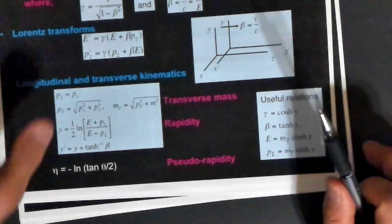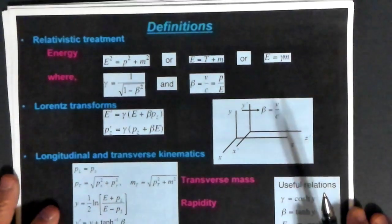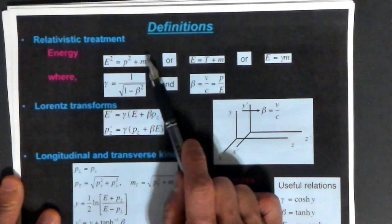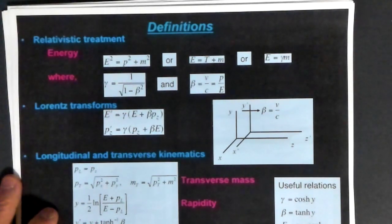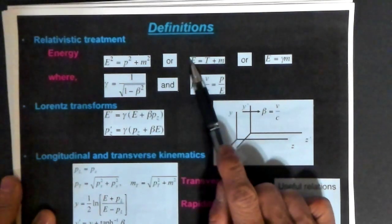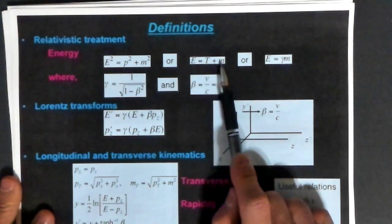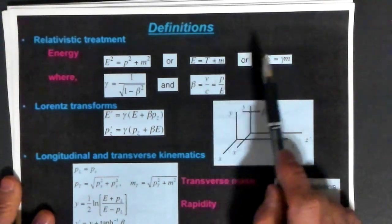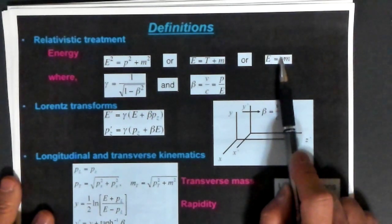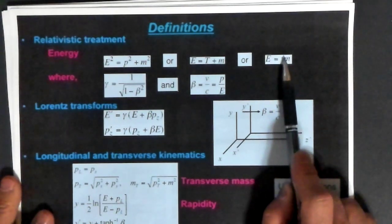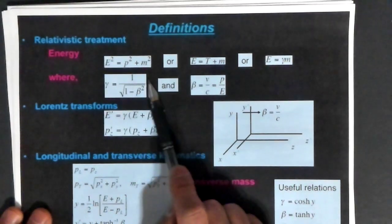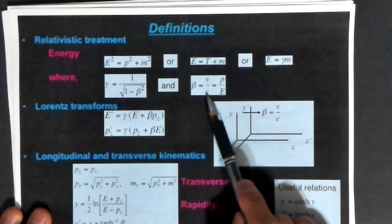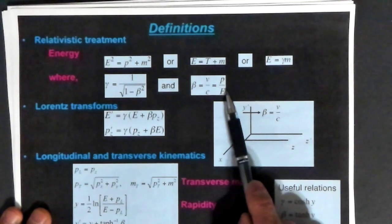Now let's talk about the relativistic dynamics. The relativistic energy relation is E² = p² + m², using units where c = 1. We can break apart the energy into kinetic energy and mass, or write E = γm, where γ = 1/√(1−β²), and β = v/c = p/E. For two different Lorentz frames with relative velocity v in the z-direction, the energy transforms as E′ = γ(E + βp_z), and p_z′ = γ(p_z + βE).